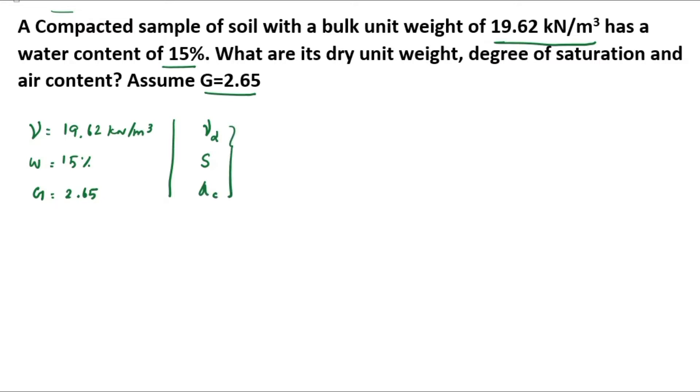First we can find out the gamma D value. Gamma D equals gamma divided by 1 plus W. We can substitute all the values: gamma equals 19.62 divided by 1 plus 0.15. We get the value of 17.06 kN per meter cube.